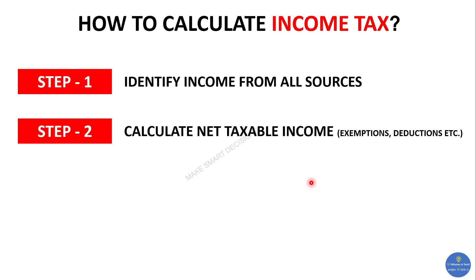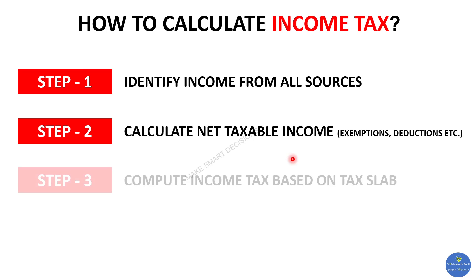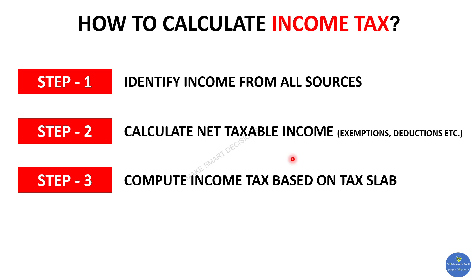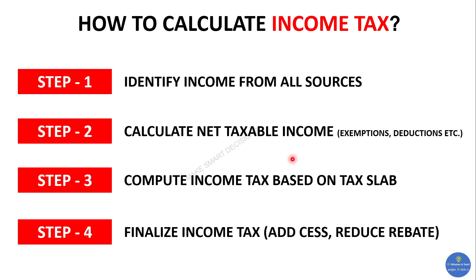Step two: from the total income, you calculate the net taxable income. Let's say your total income is 10 lakhs — it doesn't mean you pay tax on the entire 10 lakhs. There are exemptions and deductions that reduce your total income to a smaller amount, called net taxable income. Step three: look at the income tax slabs defined by the Government of India and compute tax accordingly. Step four: make adjustments such as cess or rebate if your taxable income is less than five lakhs.